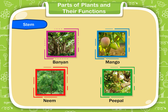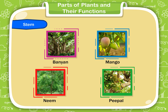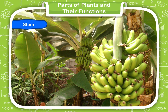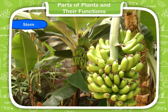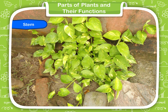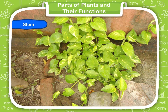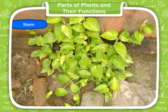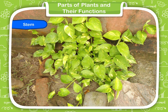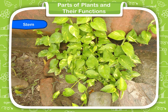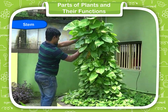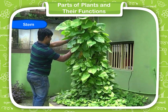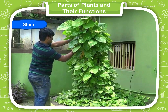The trunk helps the plant to stand upright. Some plants like banana have soft, thick, and green stems. Some plants like money plant have very soft and weak stems. They bear leaves but cannot hold the plant upright. They need a support to climb up. These plants are called climbers.